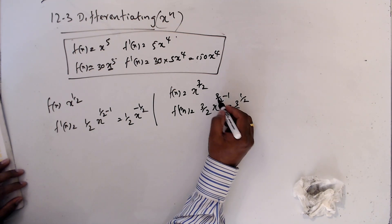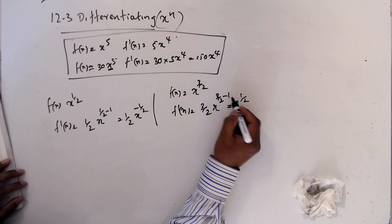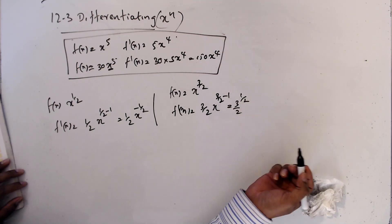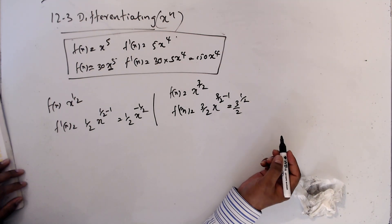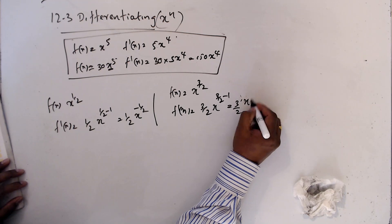3/2 means 1.5, and when you take 1.5 minus 1 you get 0.5, which is x^(1/2).